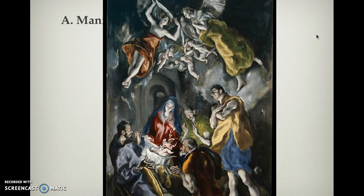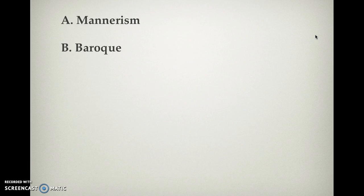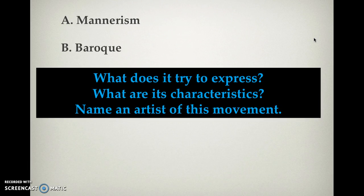One more El Greco — this is the Birth of Christ. Same color palette, same skin tones. The figures seem a little elongated, stretched out, out of proportion. Notice the source of light is not realistic either — it's not a lantern or a candle, it's Christ himself. Notice how the light is projecting from the Christ child.